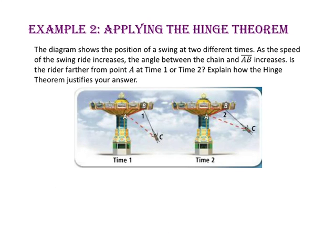In example 2, we will apply the hinge theorem. The diagram shows the position of a swing at two different times. As the speed of the swing increases, the angle between the chain and side AB increases. Is the rider farther from point A during time 1 or during time 2? Since the lengths of segment AB and segment BC stay the same throughout the ride, the rider is going to be farther from point A during time 2 because the angle measure is larger during time 2 than it is during time 1.